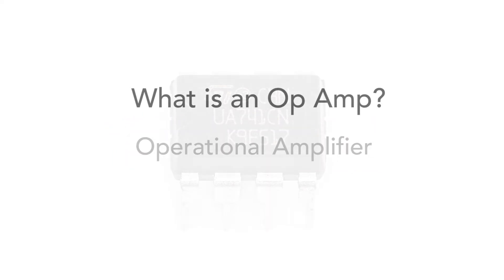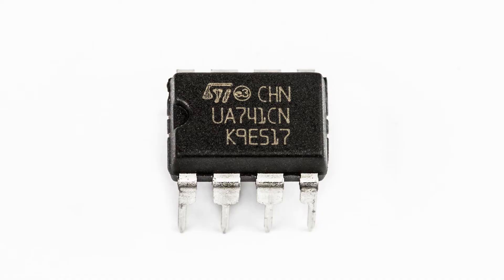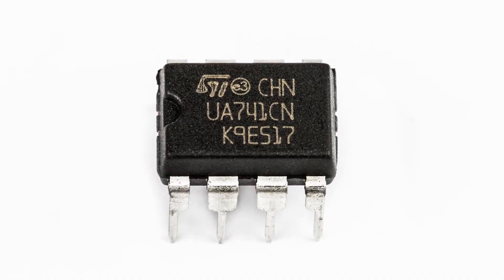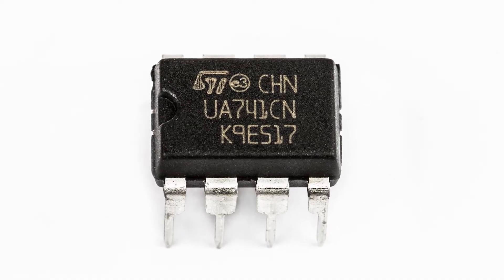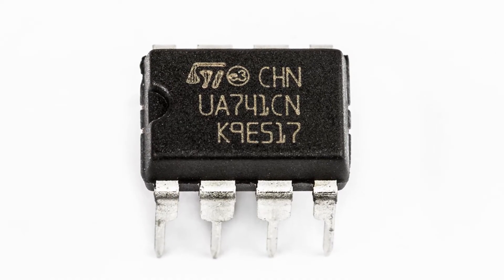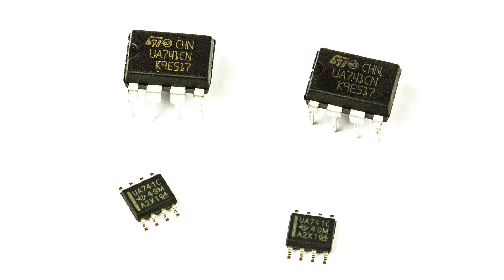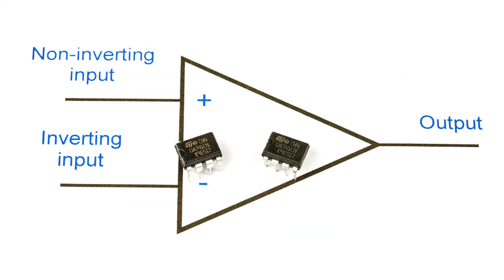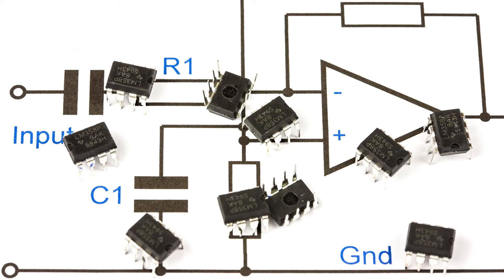Operational amplifiers, or op-amps, are one of the most useful circuit blocks available for analog circuit design. They've been around for many years and are now a staple for the design engineer. Op-amp ICs come in a variety of forms: standard dual inline chips, surface mount versions, and you can also get several individual op-amps in one chip. Op-amp functionality is also contained in much larger analog ICs.